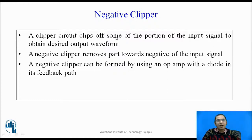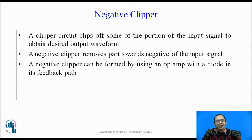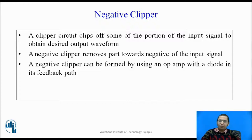In today's lecture, let us have a look at a very popular circuit designed using op-amp called the negative clipper circuit. A clipper circuit clips off or chops off some portion of the input signal to obtain the desired output waveform. A negative clipper circuit removes the part of the waveform which is towards the negative of the input signal. This circuit can be formed using an operational amplifier and a diode in its feedback path. We will look at two types: a negative clipper with a negative reference voltage, and a negative clipper with a positive reference voltage.